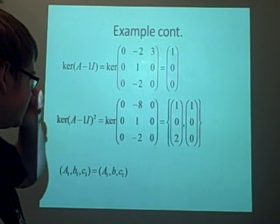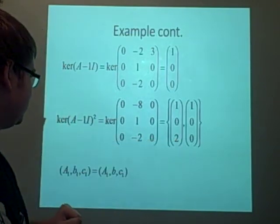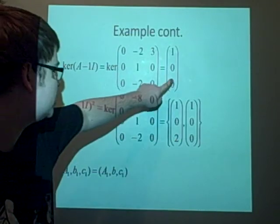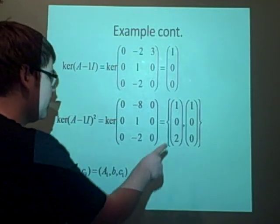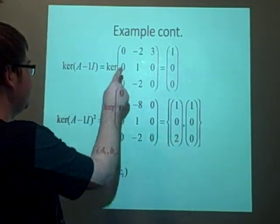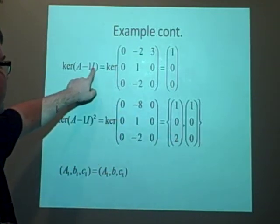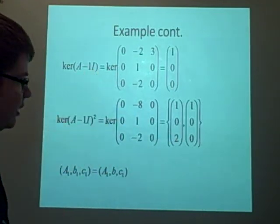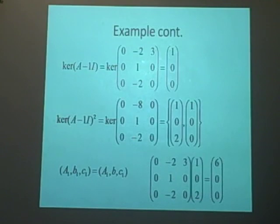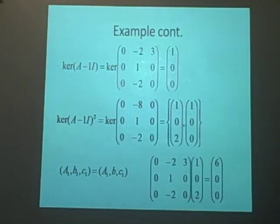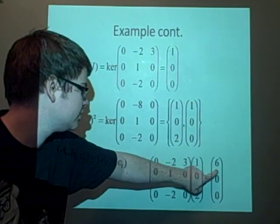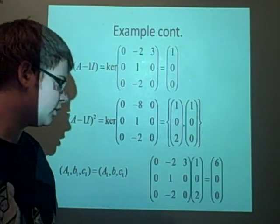So now what we want to do is we want to get the c1 and let that equal, stay as it is, but then we want to change this by multiplying this by this. So we've multiplied this by the A-I, and this will give us 6, 0, 0. So we're changing this to this.